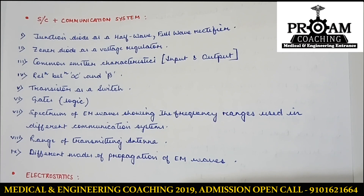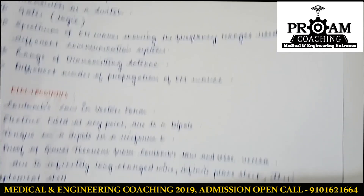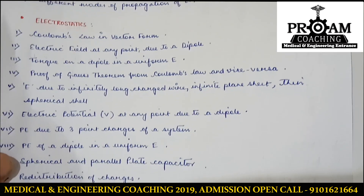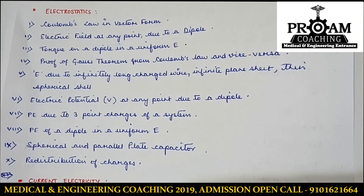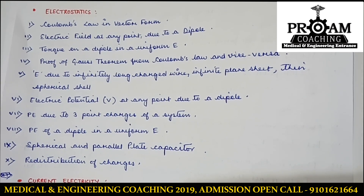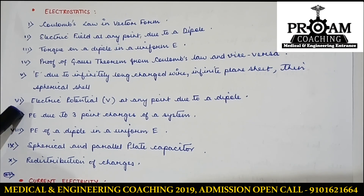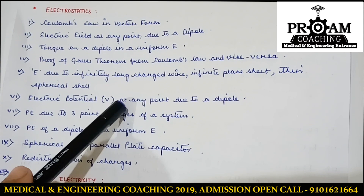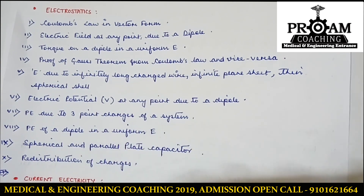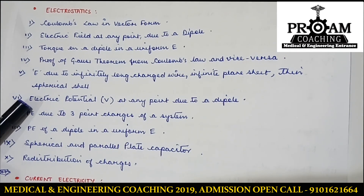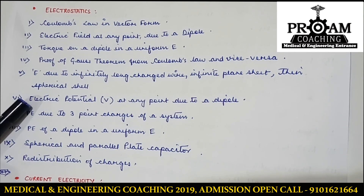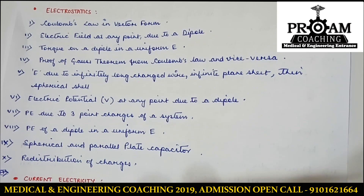In electrostatics there are 10 very important derivations, including Coulomb's law in vector form, Gauss's theorem proof, electric potential at any point due to a dipole. For the dipole topic, there are special cases like the axial point and equatorial point — you have to cover all those special cases as well, even though I have not explicitly mentioned them here.